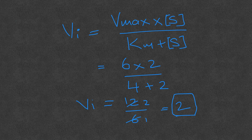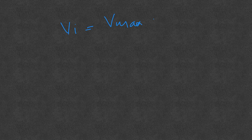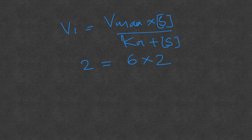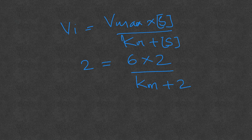Now let's see how to calculate Km when initial velocity, maximum velocity, and substrate concentration are given. Using the Michaelis-Menten equation: Vi = Vmax × [S] / (Km + [S]). We know Vi = 2, Vmax = 6, substrate concentration = 2, and Km is unknown. So: 2 = 6 × 2 / (Km + 2). Now all we need to do is cross-multiply.